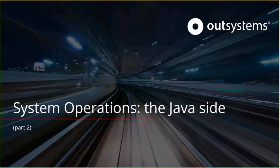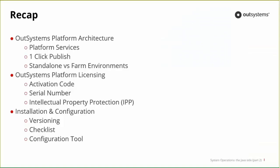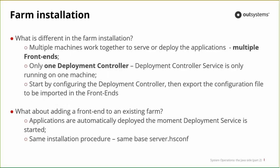This is part two, and the first thing we're going to do is recap what we talked about on the last session. We talked about the OutSystems platform architecture, which services we have, the one-click publish, standalone versus farm environments, the OutSystems licensing, what's an activation code, serial numbers, what's IPP, and we got into the installation and configuration — versioning, the checklist, and the configuration tool. Starting on the installation in standalone versus farm, what we're going to talk about today is the farm installation.